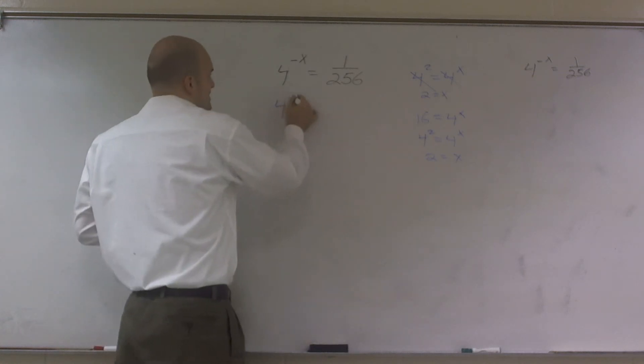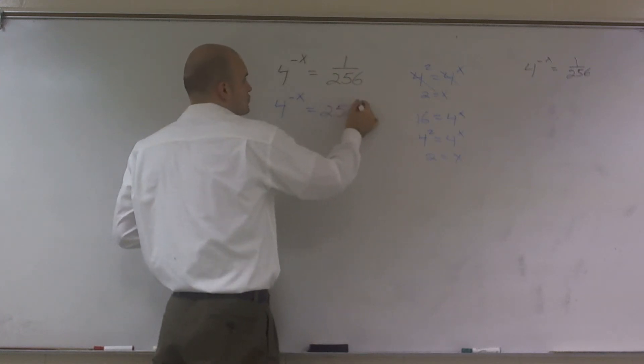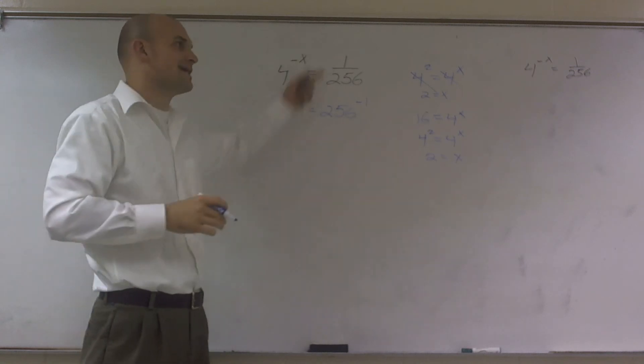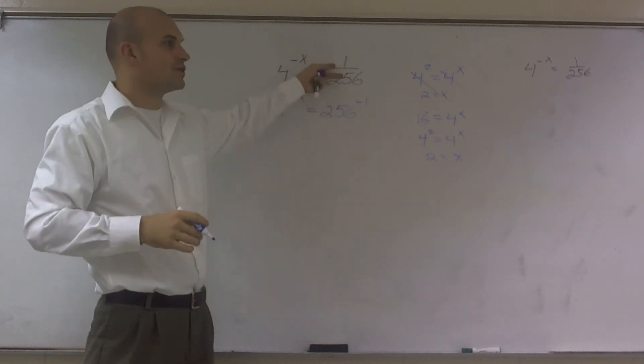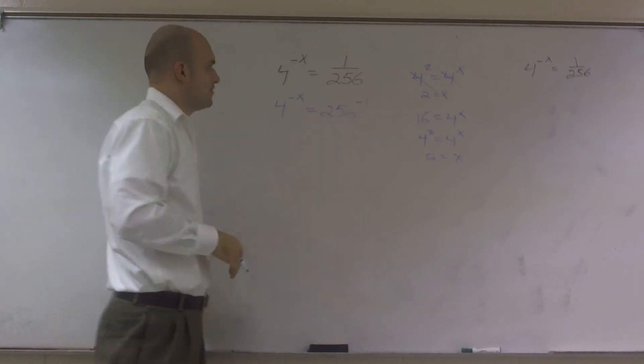So I have 4 raised to the negative x equals, I can rewrite this as a numerator of 256 to the negative first power. You guys got to remember that you can write your 1 over 256 raised to the negative first power.